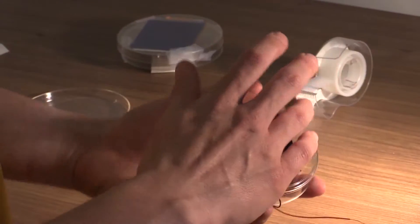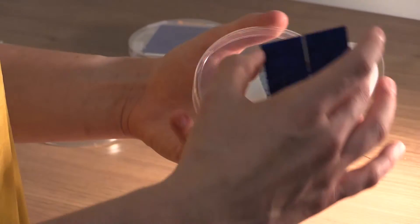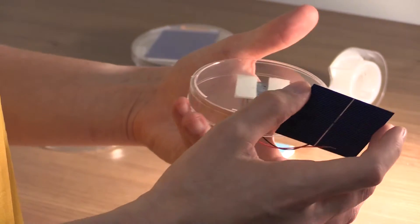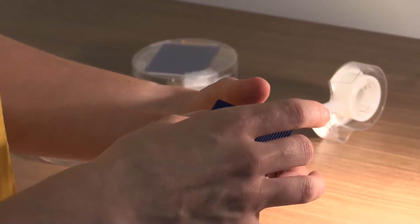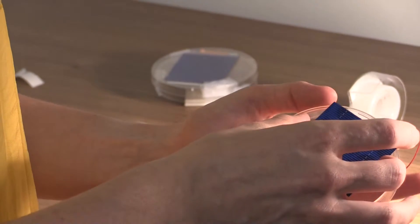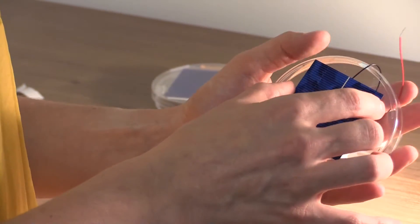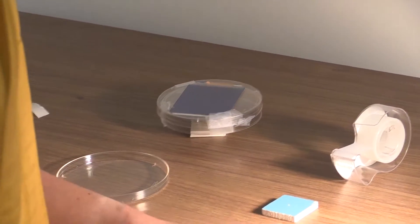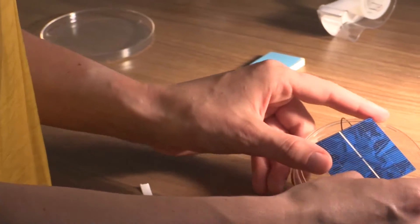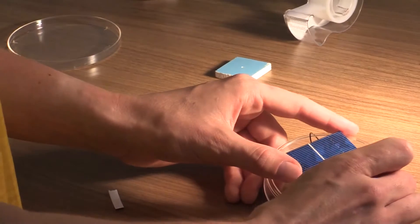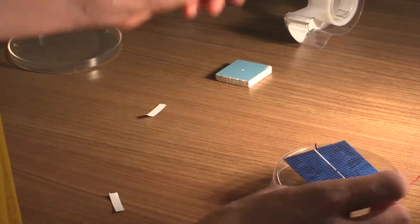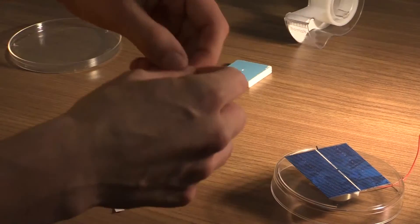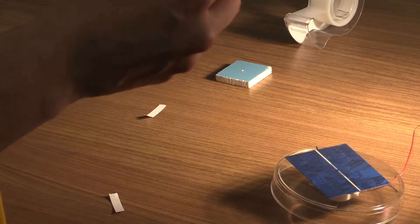Now flip it over and attach it to the front side. Bring the red wire so that it's opposite of the black wire and attach it to the white strip on the front of the solar panel.